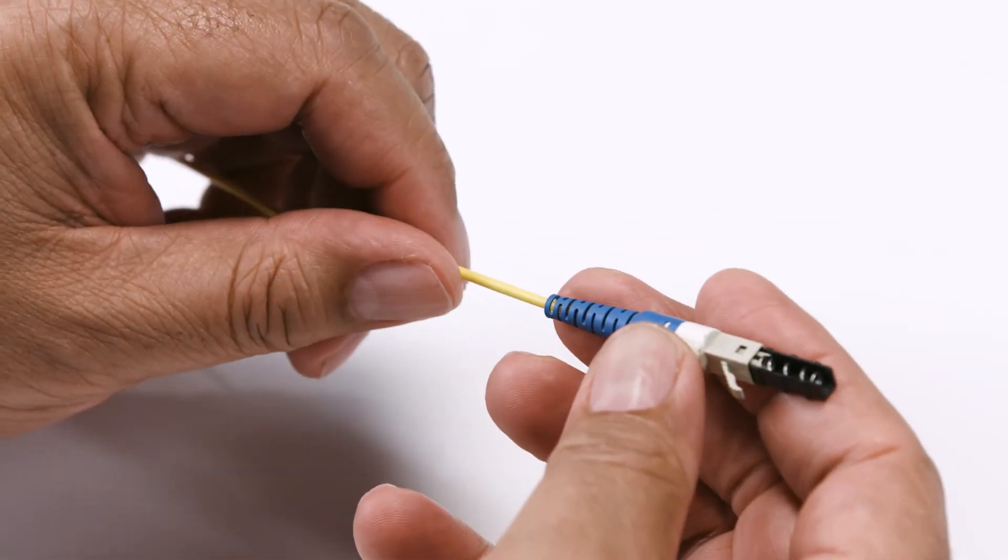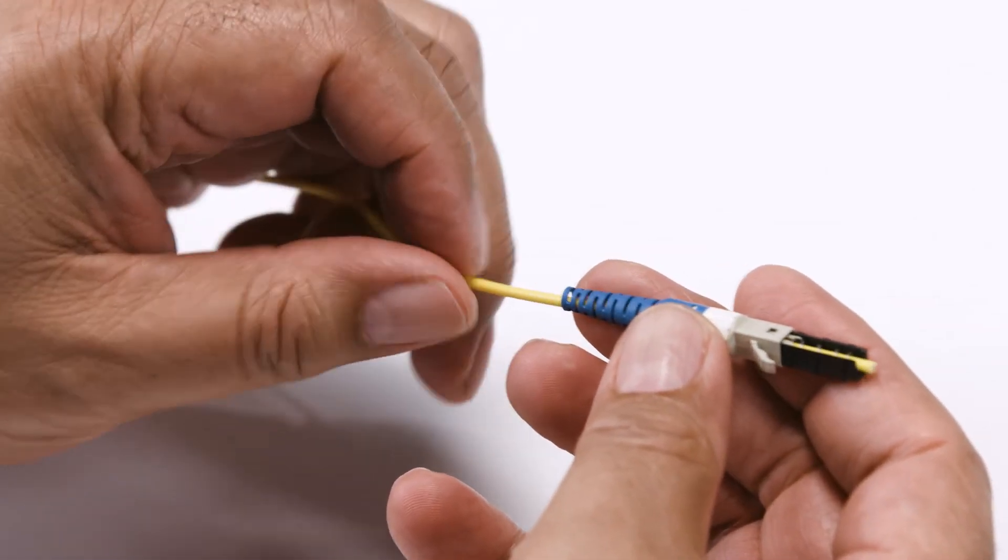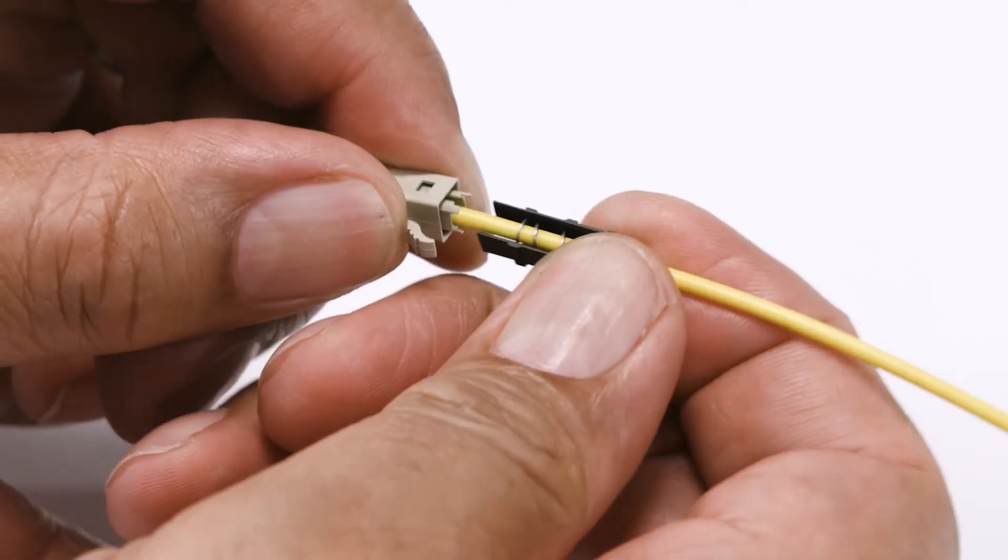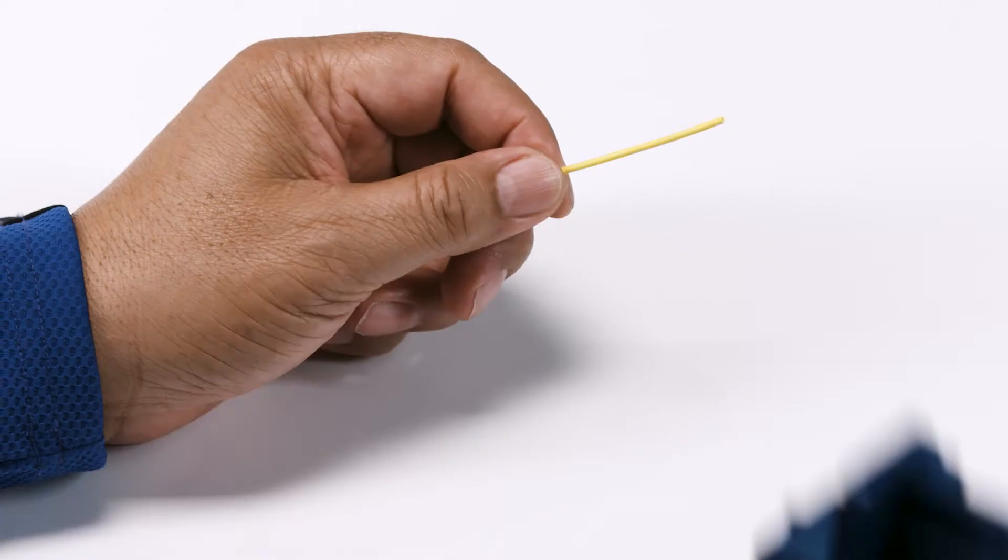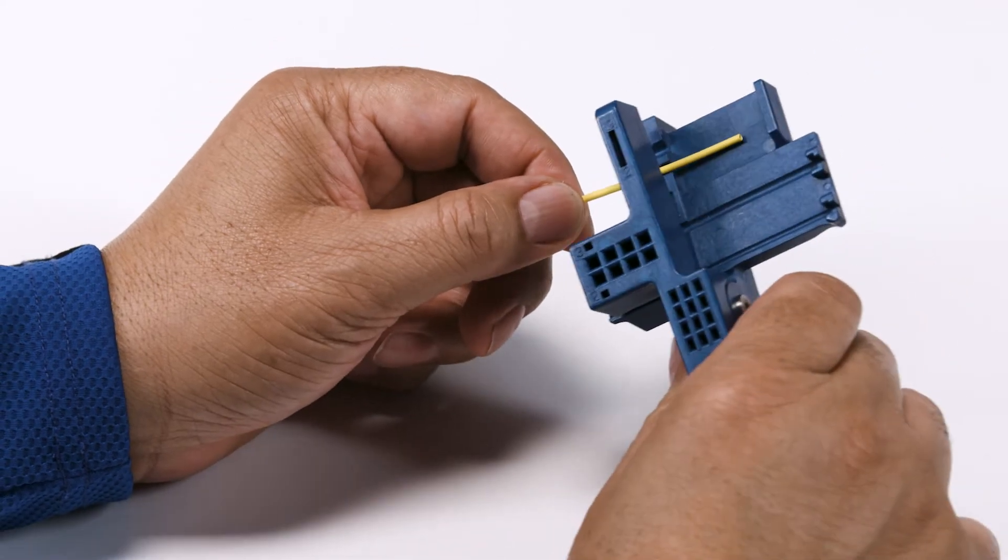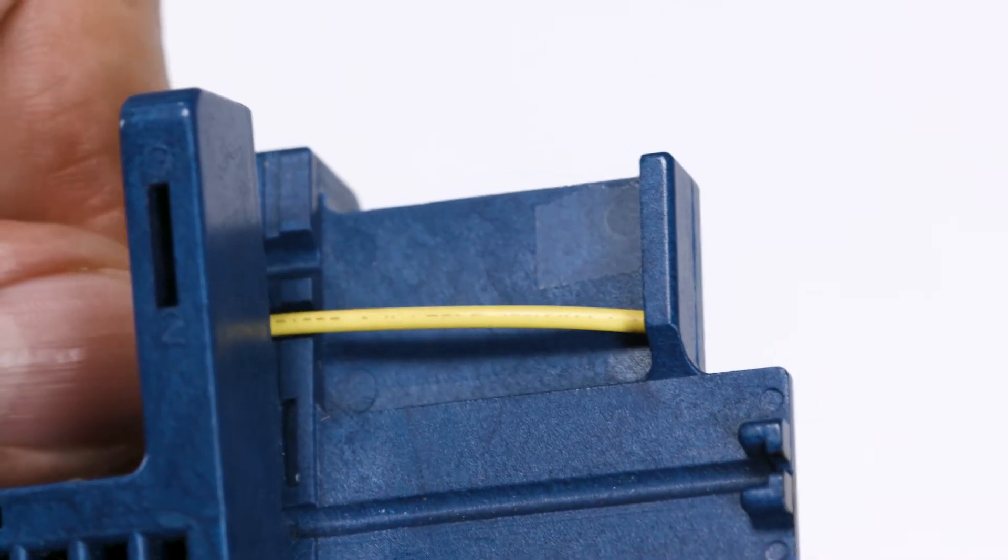To start cordage preparation, place all rear connector components on the cord. Remove the protective tube. Use the cord tool to remove specified length of cordage.